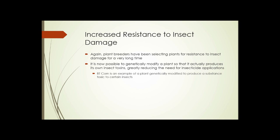Bt corn is an example of a plant genetically modified to produce a substance toxic to certain insects. The Bt in Bt corn stands for Bacillus thuringiensis, a bacteria that produces a toxin which is poisonous to insects that have a caterpillar stage in their life cycle.